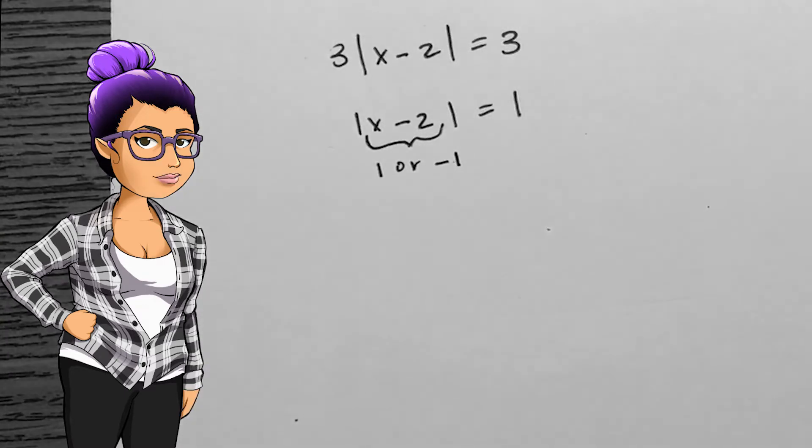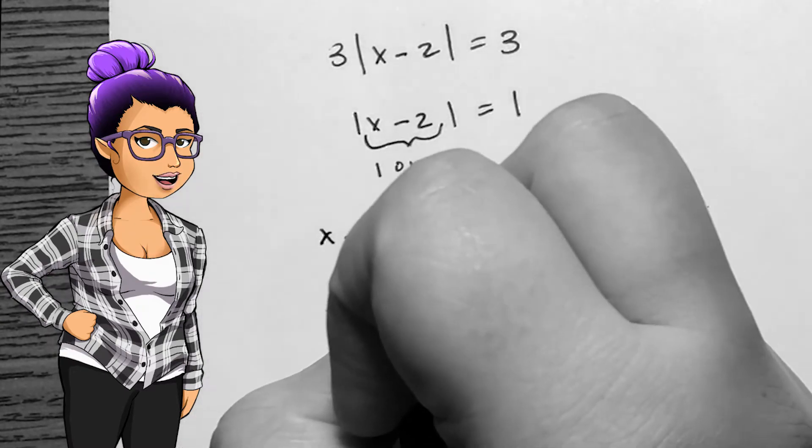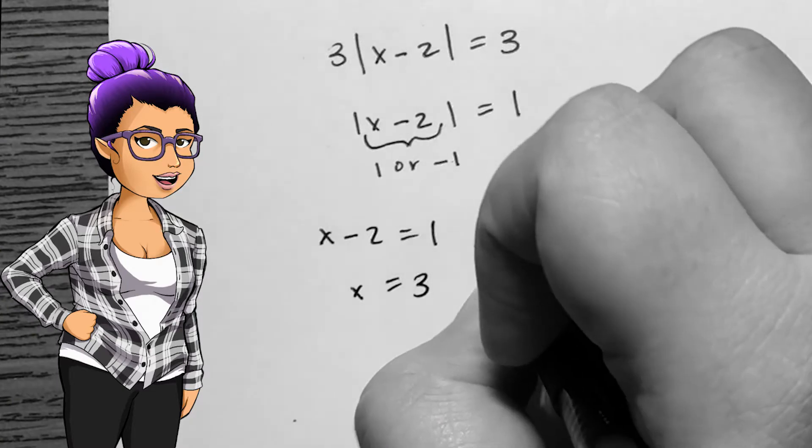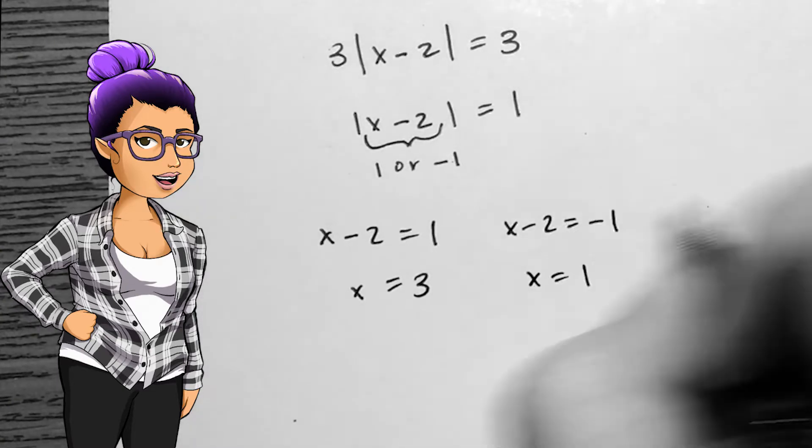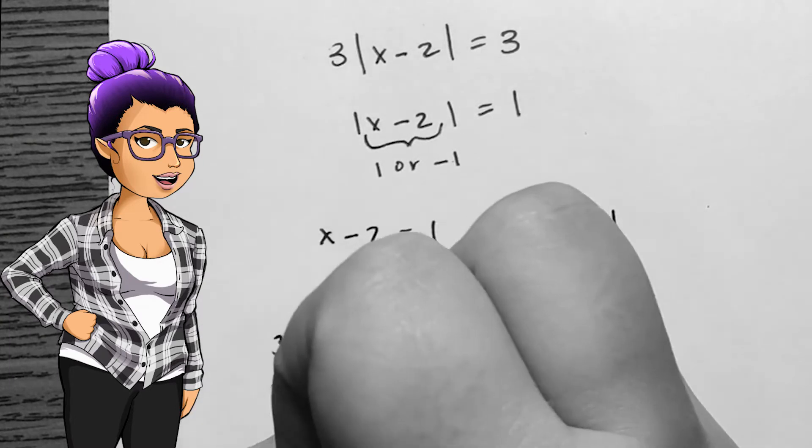Dividing both sides by 3 gives us absolute value of x minus 2 equals 1. Now according to what we know about absolute value functions, the bit on the inside of the absolute values could be either positive 1 or negative 1, and we should consider both.